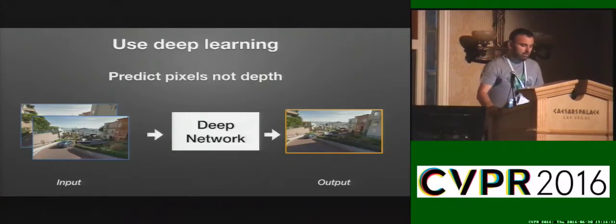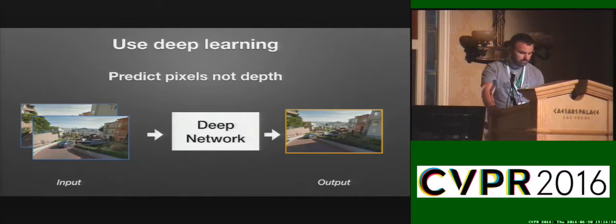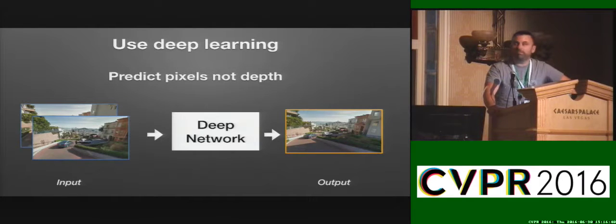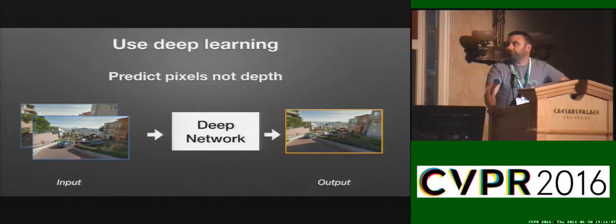With deep learning, we have a powerful method that can learn from the data. A key idea of our work is we aim to reconstruct the synthesized view directly from pixels in the adjacent views. This has the advantage of not requiring ground-truth depth maps during training. Instead, all our method needs is a set of posed images — for instance, all of Street View.